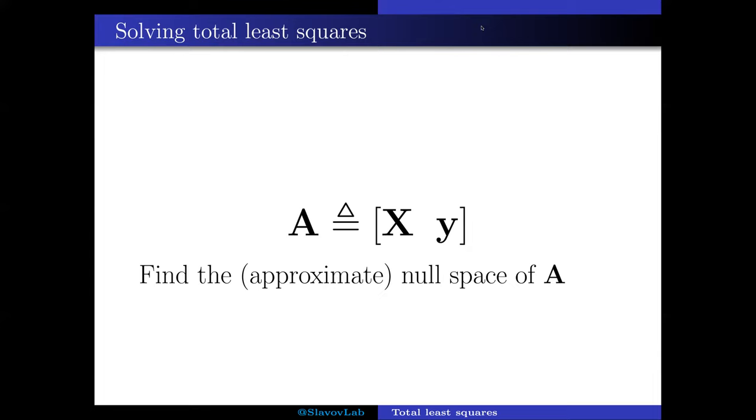Because if both X and Y have errors, we would like to treat them symmetrically rather than putting them on the different side of the equation, doing different things to them.